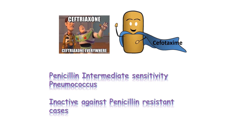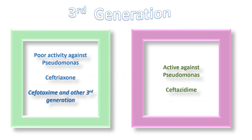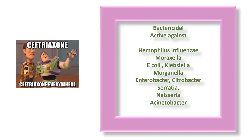Based on activity against Pseudomonas, third generation cephalosporins are roughly grouped into two groups: one that is active against Pseudomonas, and one that is poorly active against Pseudomonas. The drugs poorly active against Pseudomonas are Ceftriaxone and Cefotaxime. Ceftriaxone is a bactericidal agent for gram-negative pathogens.